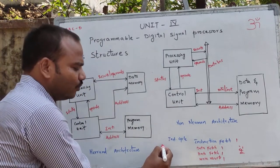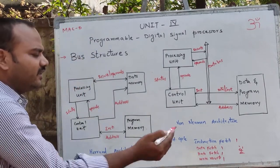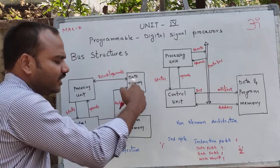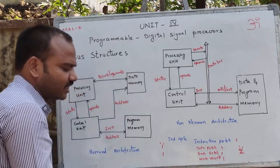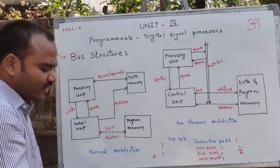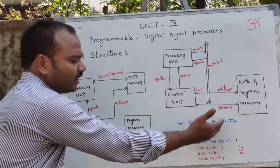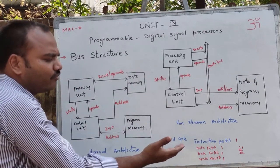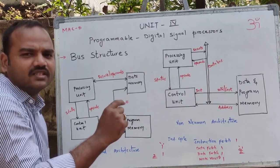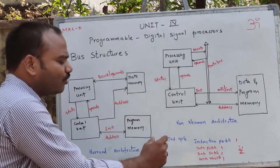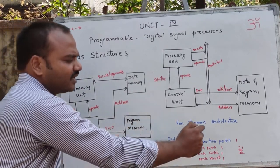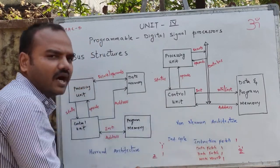These two operations — instruction fetch and data fetch — are completed in one clock cycle. In the next clock cycle, another data fetch, computation, and writing results back to data memory requires one more clock cycle. So comparing Von Neumann and Harvard architecture, the MACD instruction requires only two clock pulses on Harvard architecture versus four on Von Neumann architecture.